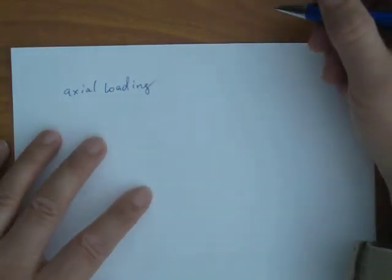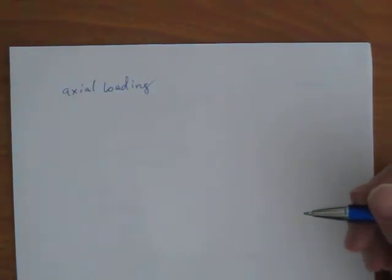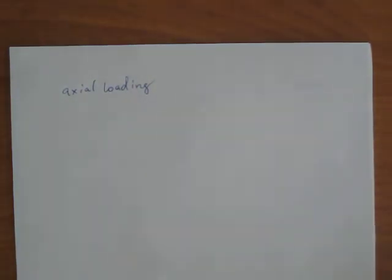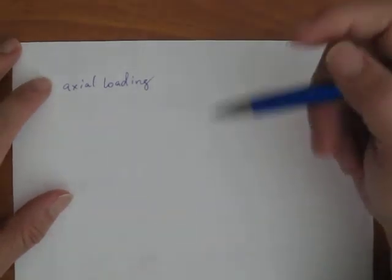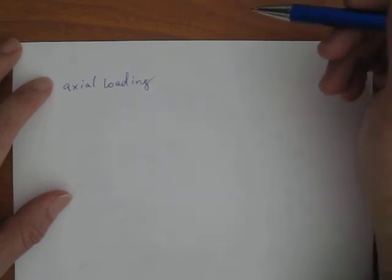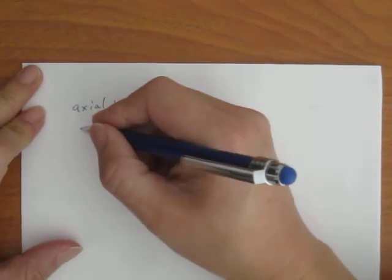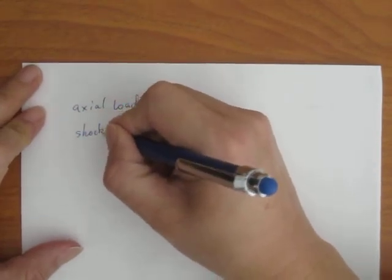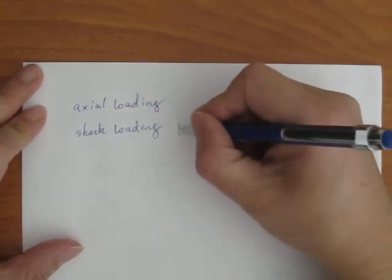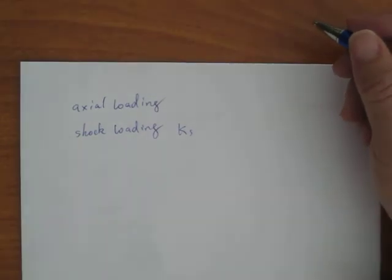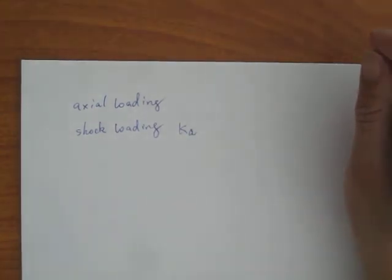We can also introduce a factor to take into consideration of actual loading. For example, when you drive your automobile and you make a turn, that's going to create axial loading. How about the impact shock loading? We can use a shock loading factor KS, okay, just like the KR or the book uses KA, shock loading just like KR.